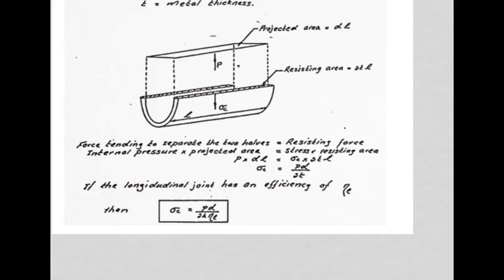If the welding process results in a strength half as much as the surrounding material, that joint would be said to be 50% efficient. We then increase the stress by dividing by the joint efficiency — dividing by 0.5 doubles the stress. That is how you cater for a real joint whose efficiency is less than 100%, where the joint is weaker than the surrounding material.